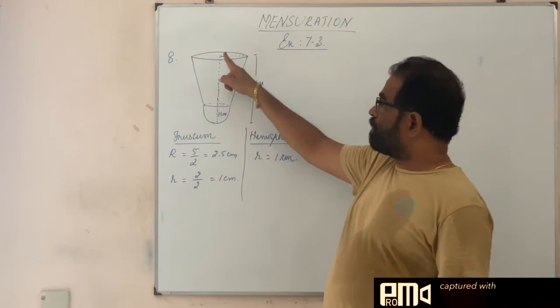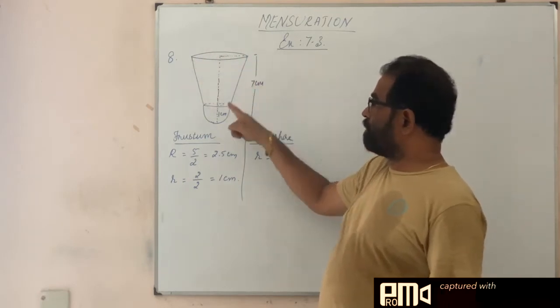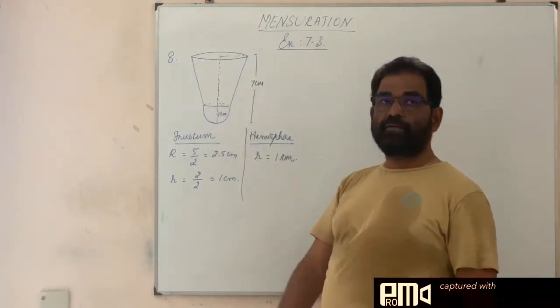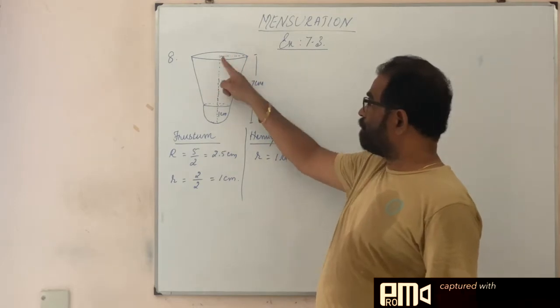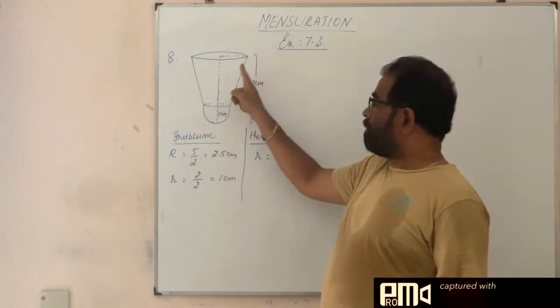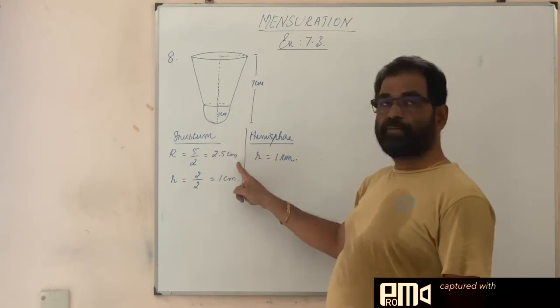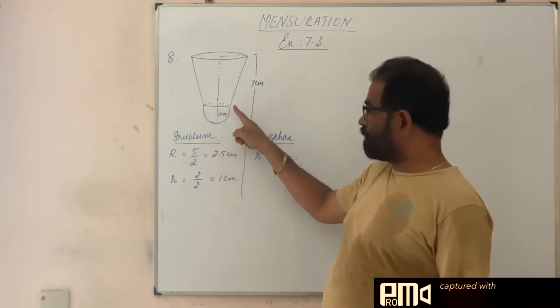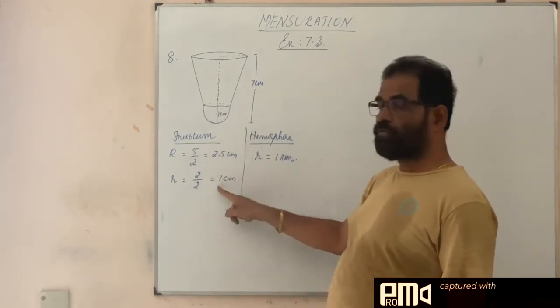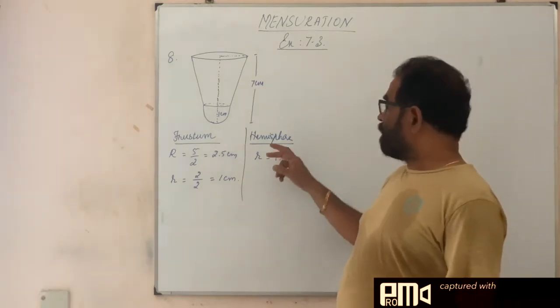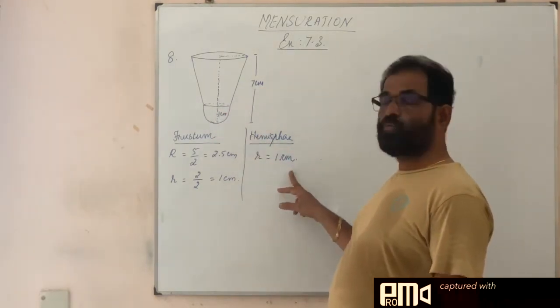So, diameter of this part is 5 cm and this lower part is 2 cm. What is the radius of the upper part? We take it as capital R. Diameter is 5 by 2, 2.5 cm. Here the diameter is 2 cm, so radius is 2 by 2, 1 cm.